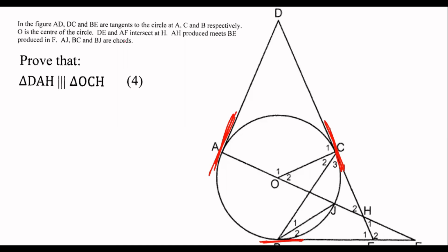Nothing else is important there. They've asked us to prove that these two triangles are similar — triangle DAH, let's highlight that, and then the other triangle is OCH.